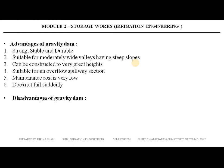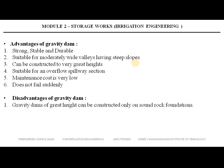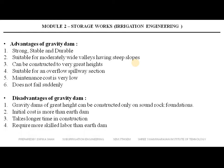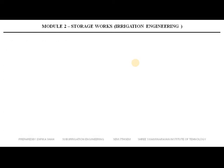The disadvantages of a gravity dam are: a gravity dam of great height can be constructed only on a sound rock foundation. Initial cost is more than an earthen dam. It takes a longer time in construction. Mechanized plants for manufacturing and transporting concrete are required. It requires more skilled labor than an earthen dam. It is very difficult to allow a subsequent rise in the height of the gravity dam.